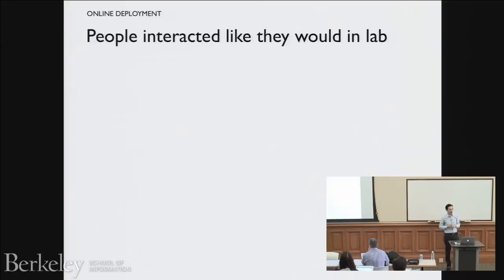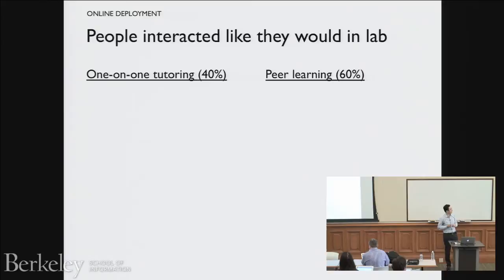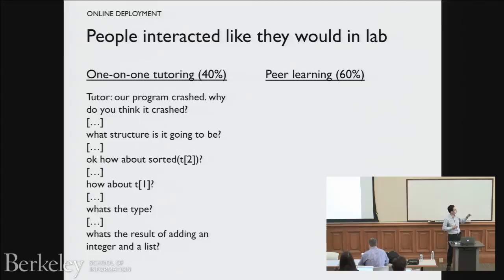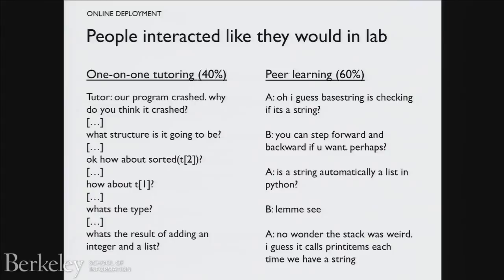People interacted like they would in labs. Based on chat log analysis, we saw two main forms of interaction in a pretty even split. One was one-on-one tutoring, where there's clearly a tutor Socratically refining questions, helping debug, and then generalizing. The other case was peer learning, which felt more tentative — two or more people going back and forth, running code, asking 'is this right?' — a lot of these peer learning cases seemed like people trying to do homework together, just like scribbling on paper.